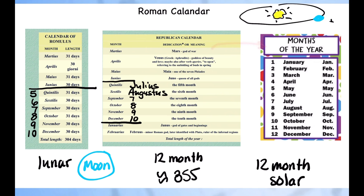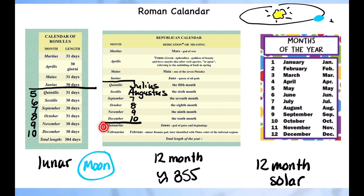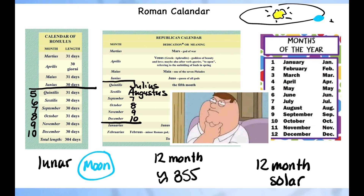Throughout time we've kept these same root names, these same Latin names from the Roman calendar, and they just developed into our current calendar. The only thing we did was reorder the months. Once January became the first month, everything was renamed — and even though September, October, November, and December were originally the seventh, eighth, ninth, and tenth months, they moved to become the ninth, tenth, eleventh, and twelfth. That is why October is no longer the eighth month, even though octo, octagon, and octopus all mean eight.